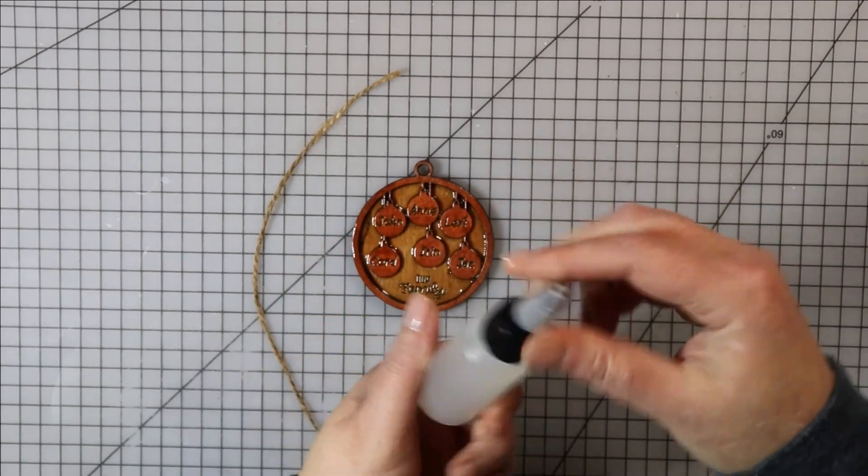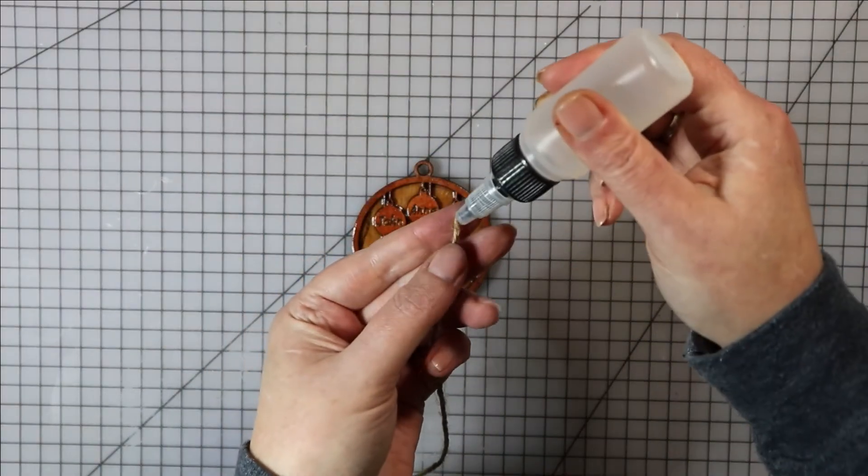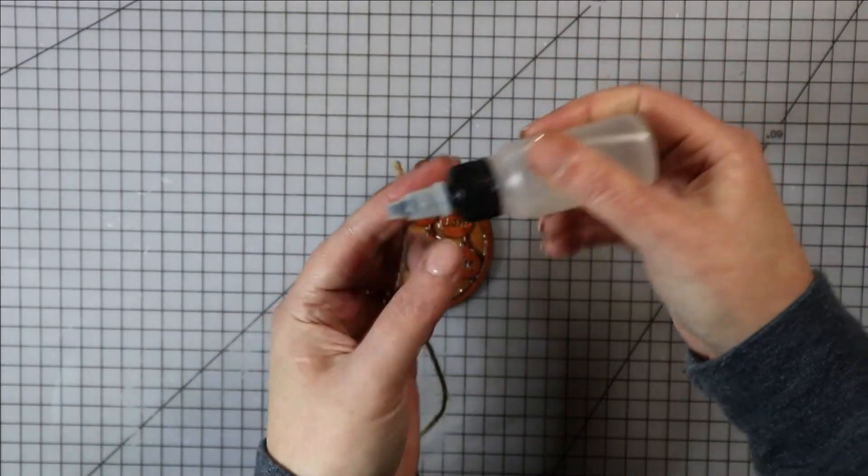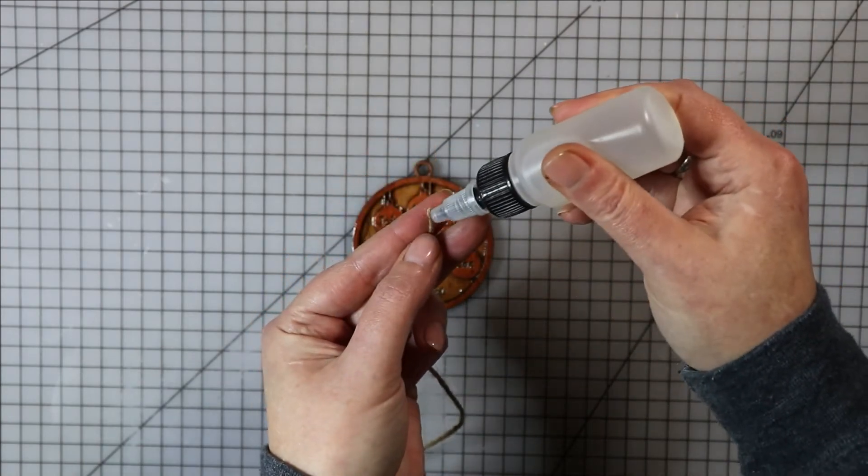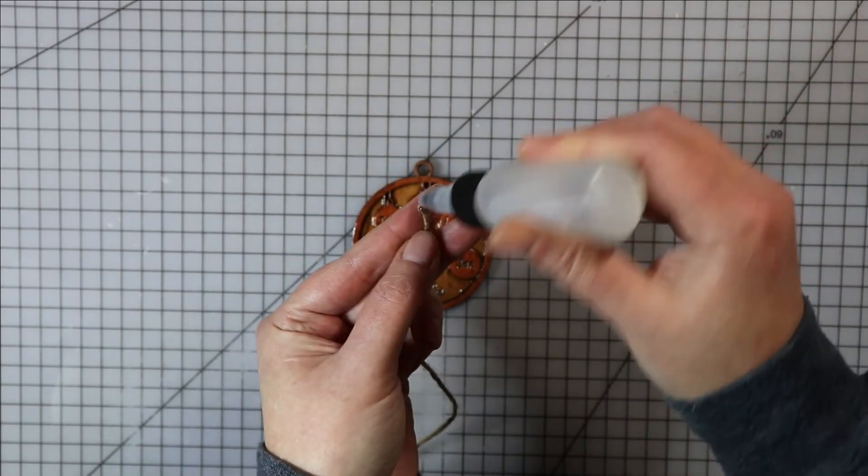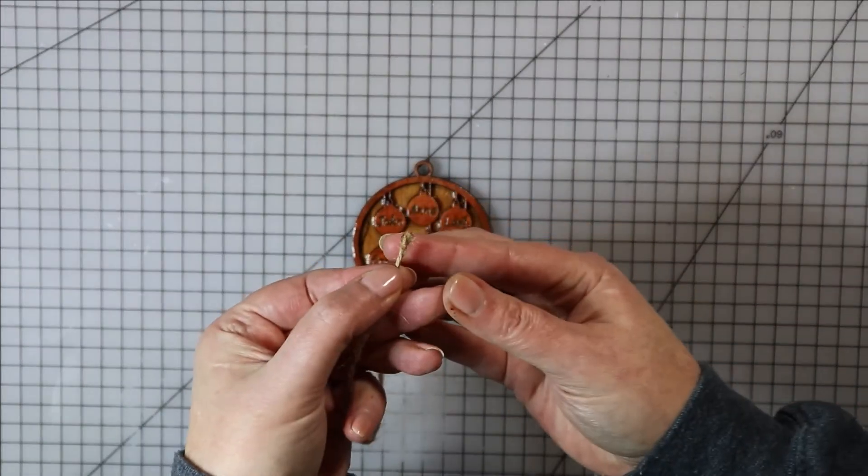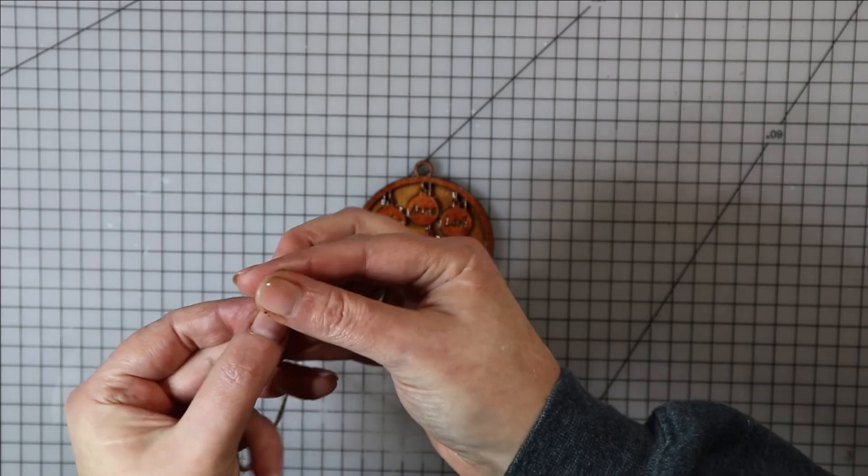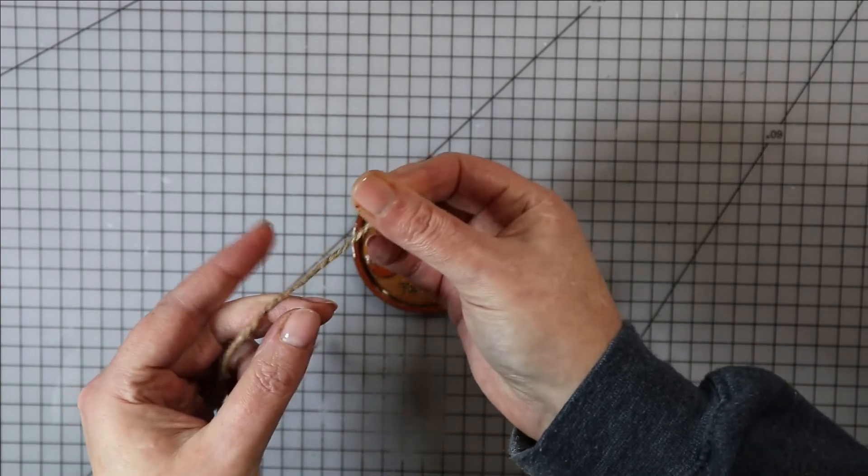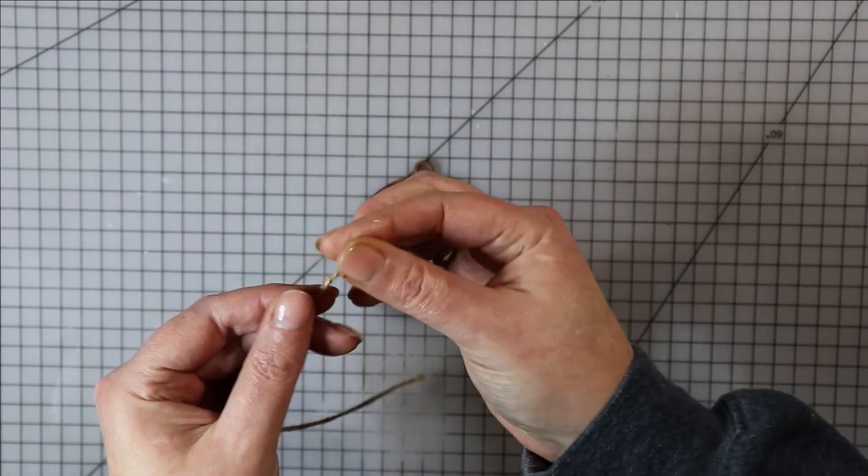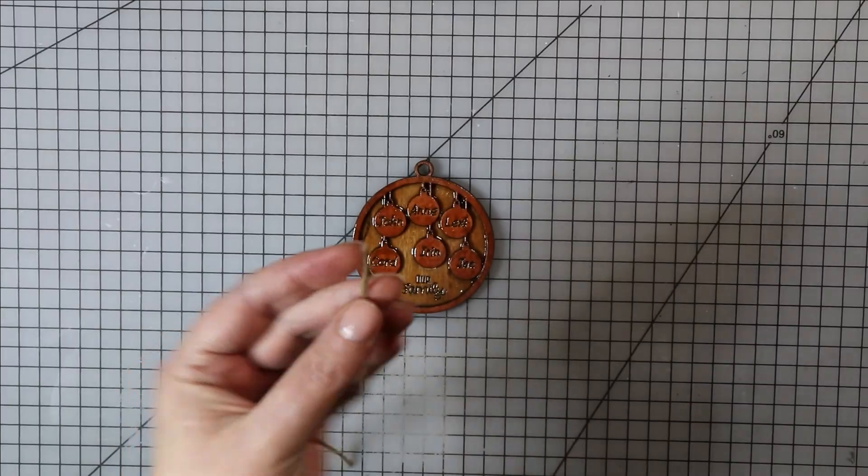Lastly, this puppy needs a hanger. Use whatever you like—yarn, string, ribbon. But if you can't get your string to go through the hole, just put a little glue on the end and roll it between your fingers before trying to thread it through. Once you get it through, cut off the glue, tie the string in a knot, and you are done.